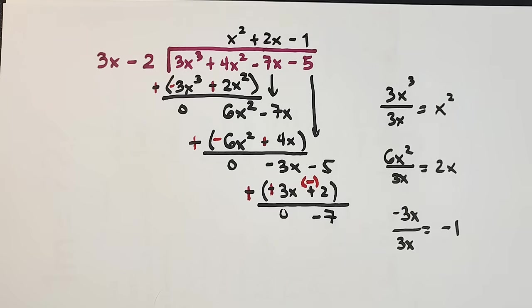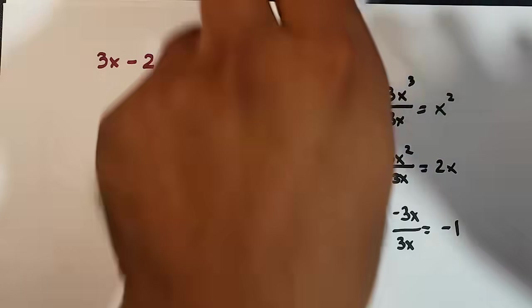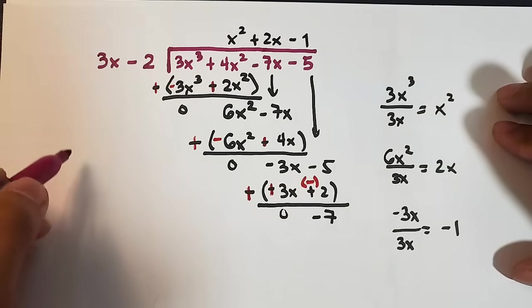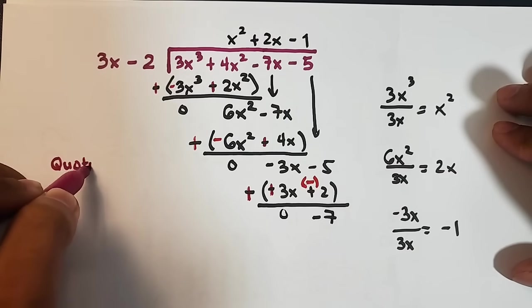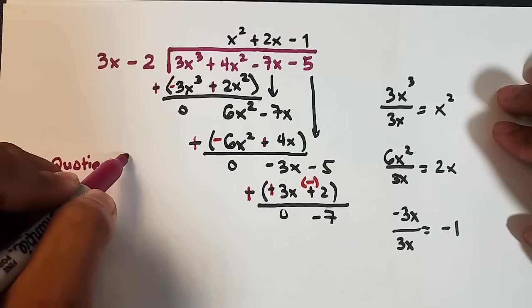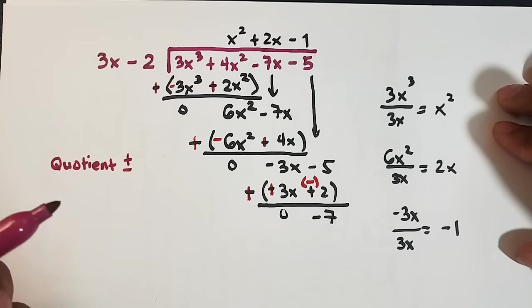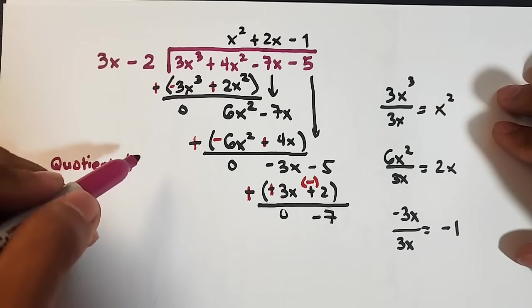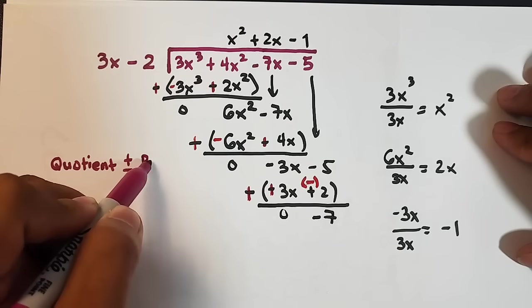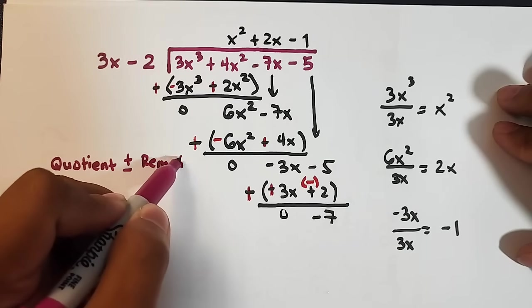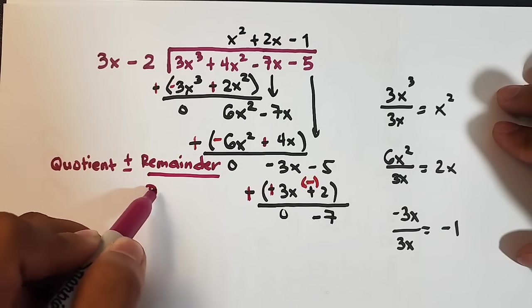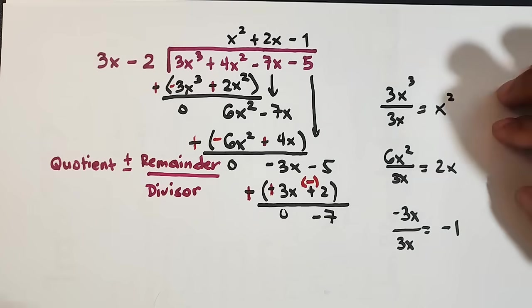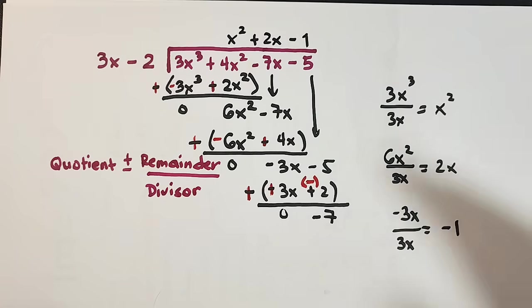So how will we write our answer. There is a format guys. This will be our format. Our format is quotient positive negative. Because this format is used when there is a remainder. Quotient positive negative remainder over divisor. So let's express our final answer. This is what you do guys.